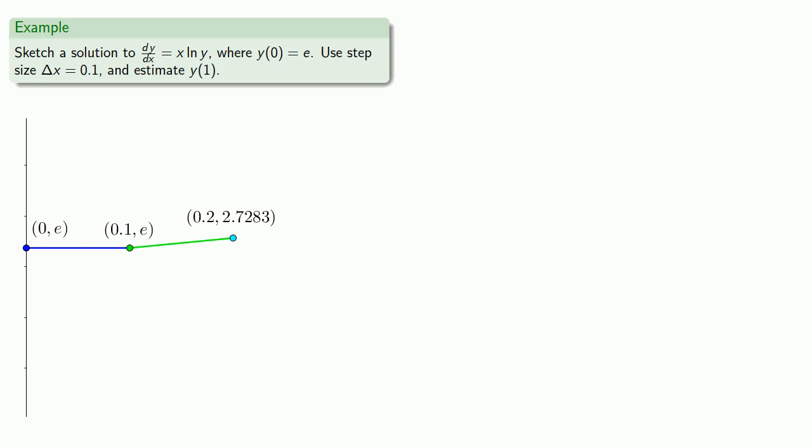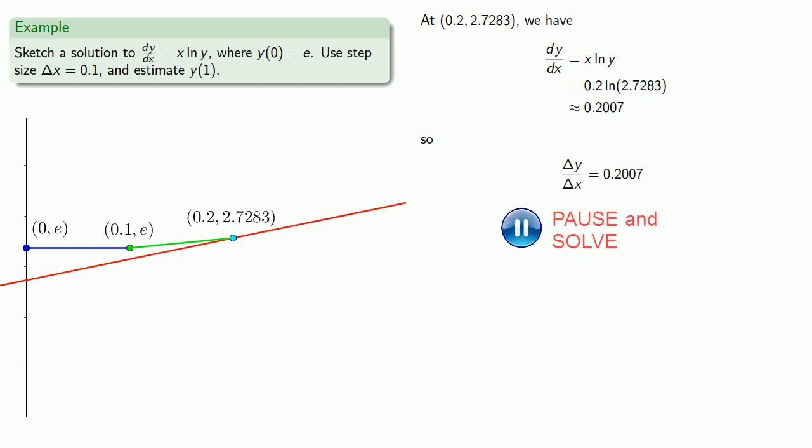Once more onto the breach. At this point, our derivative is 0.2 times ln(e + 0.01), and so delta y will be 0.02 times that value, and so we'll move to the next point.